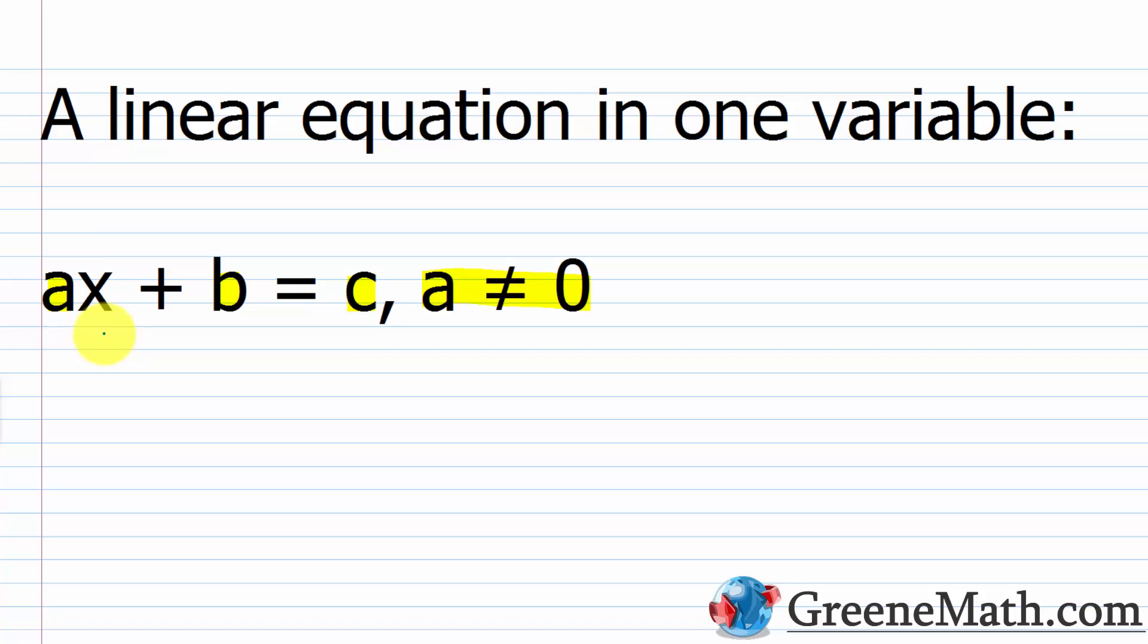The reason a can't be zero is because it's multiplying the variable. If zero was multiplying x, then you'd have no variable involved, so that would be an issue for us. Now, a linear equation of one variable is sometimes called a first degree equation, because the largest exponent on the variable is a one. Some of you remember that quadratic equations where the largest exponent on a variable is a two are sometimes called a second degree equation.